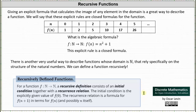The initial condition is explicitly given as the value of f(0). The recurrence relation is a formula for f(n+1) in terms of f(n), which means to determine f(n+1), we do need f(n). Whereas for an explicit formula or a closed formula, we only need the value of n, or the input.